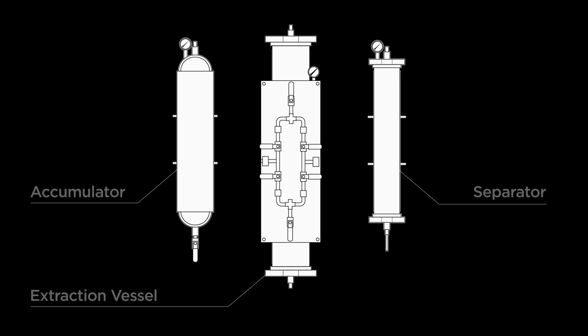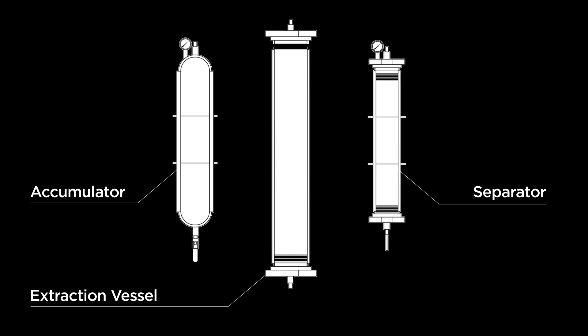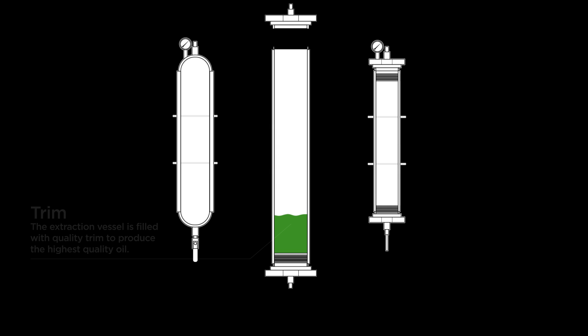The extraction system has three main components: the extraction vessel, the separator, and the accumulator. First, the extraction vessel is filled with the cannabis plant material, known as TRIM.